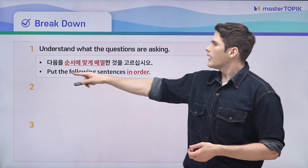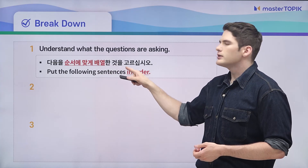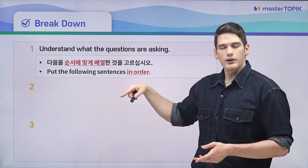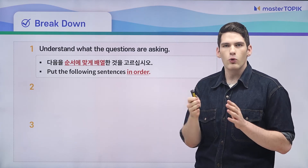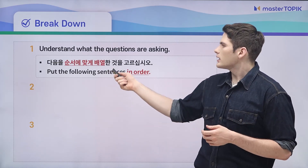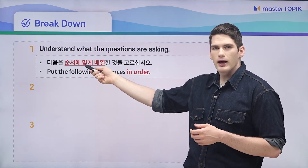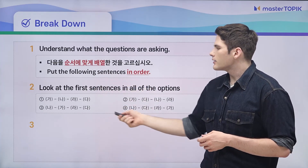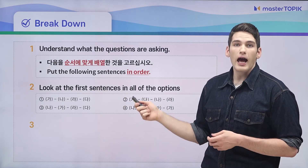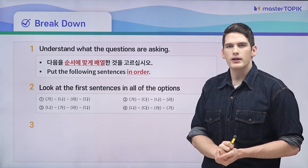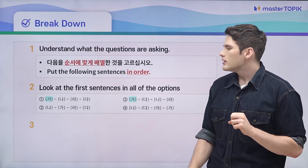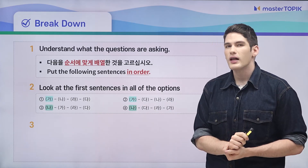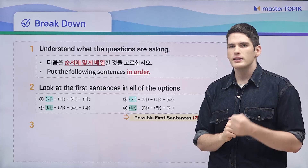So what are the questions asking? 다음을 순서에 맞게 배열한 것을 고르십시오. To 배열하다 means to put things in an order or arrange them in a line. So 순서에 맞게 means in the correct order, 순서. This is what your answer box is going to look like — all four options will have a different order the sentences could go in. Two of them are going to start with the same thing, and the other two are also going to start out with the same. So there are only two different options for the first sentence.